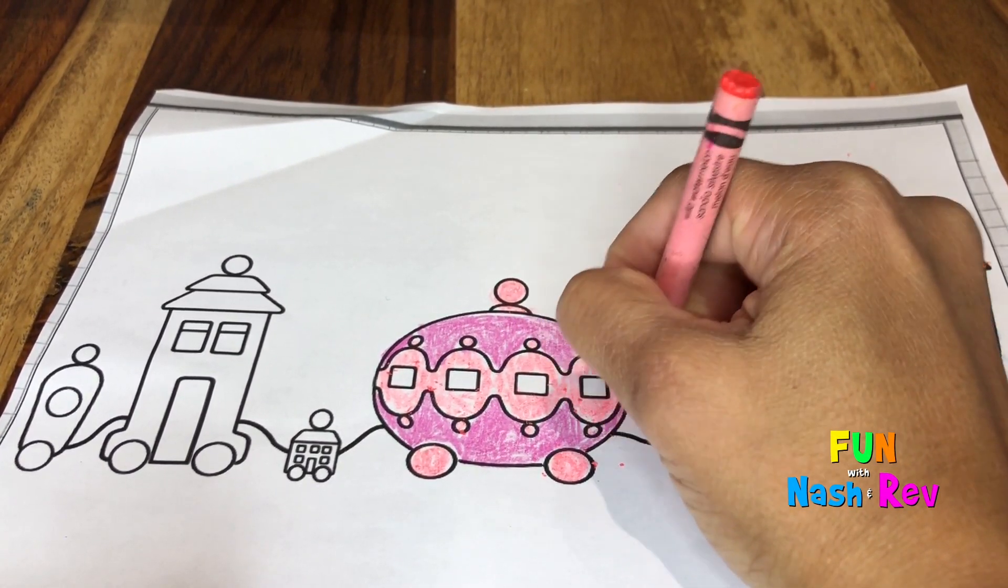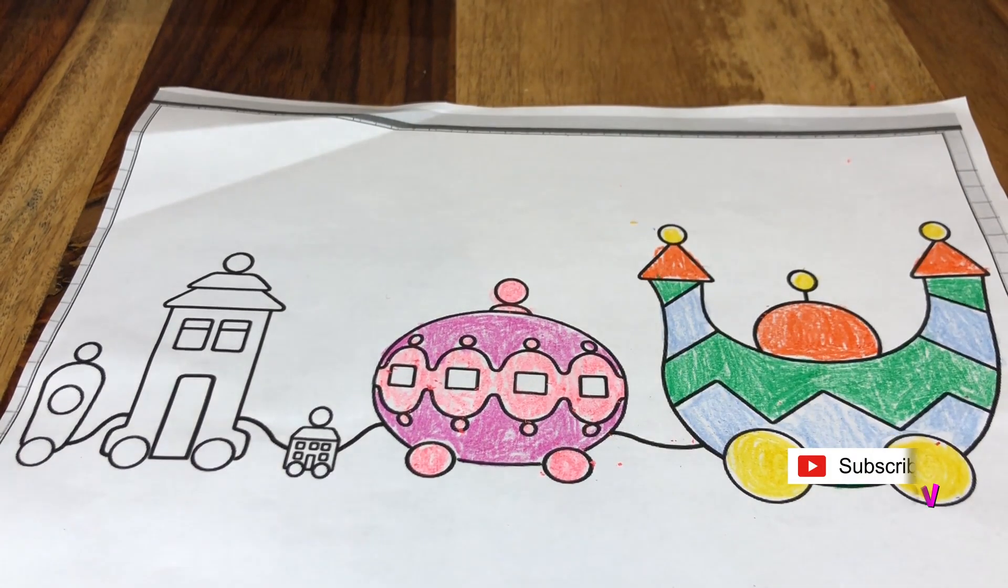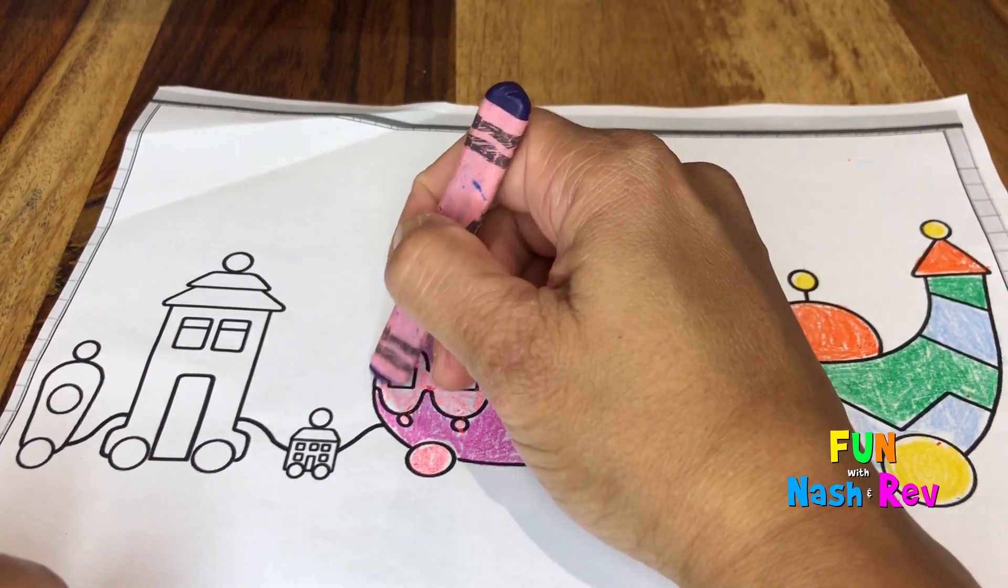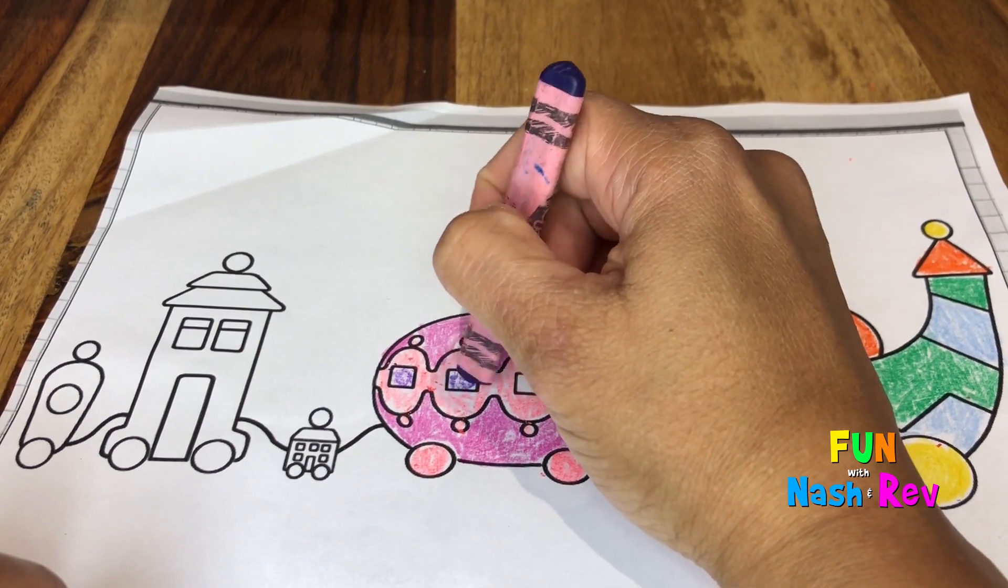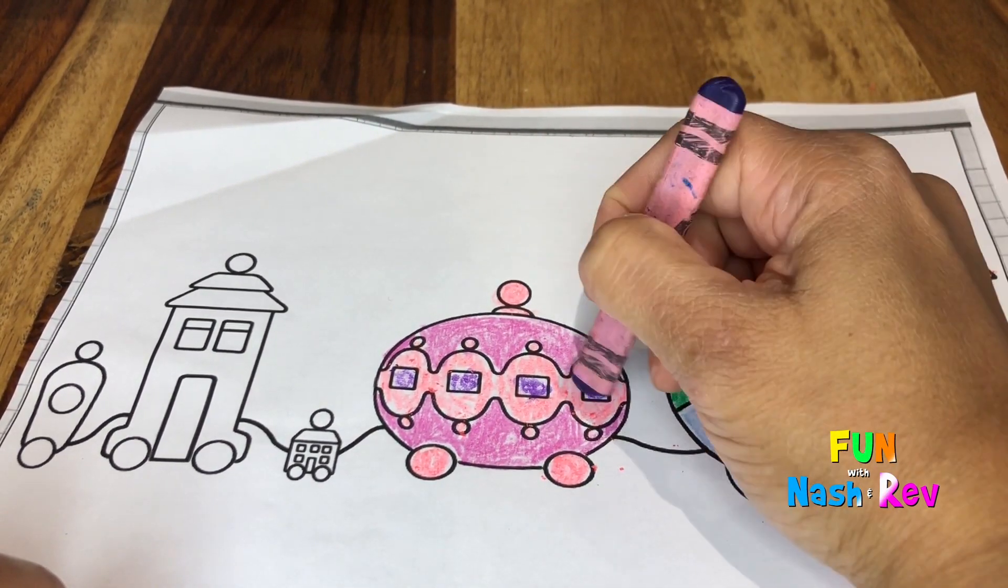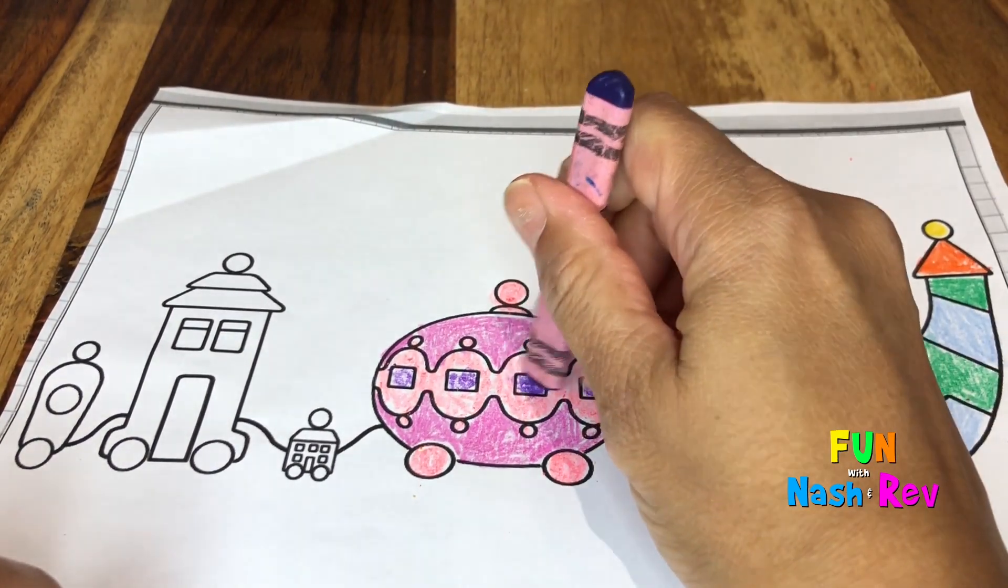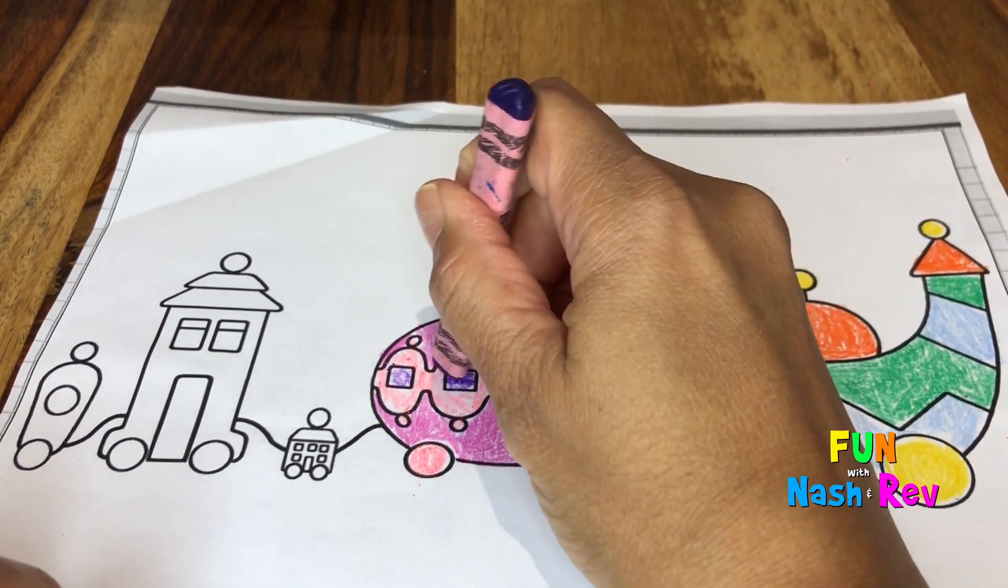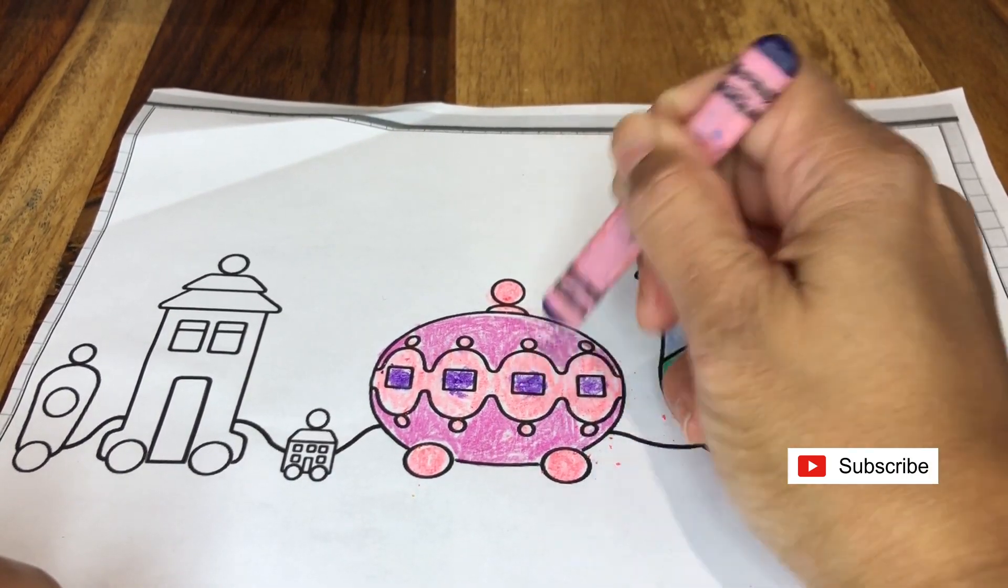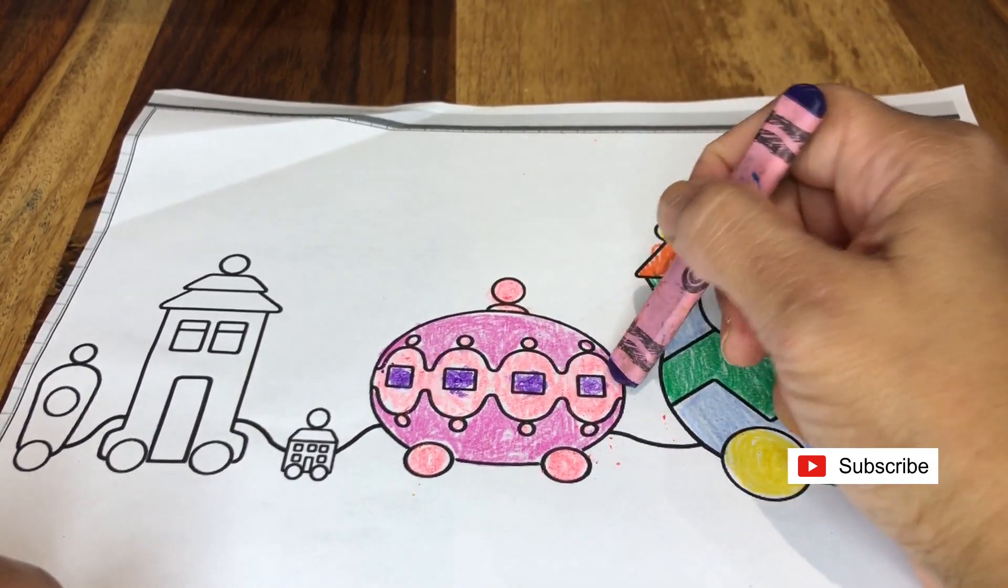What color should we color the windows? Normally they're like a blue color. I'm going to color them purple. Four squares: one, two, three, four.